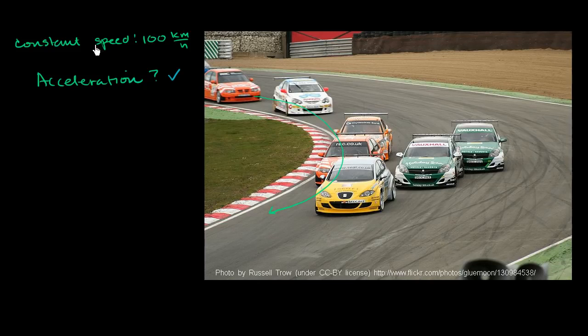I wanted to point this out because in an example like this, the difference between speed and velocity starts to matter. Speed is a scalar quantity, only having a magnitude. Velocity is a vector quantity, having speed with a direction — a magnitude and a direction. Let's take a top view of this thing, and I think it'll become clearer.